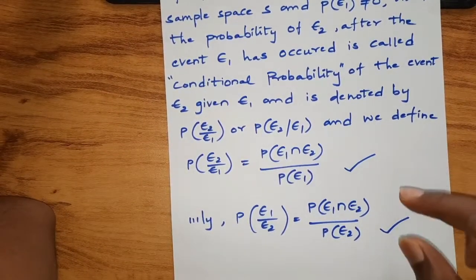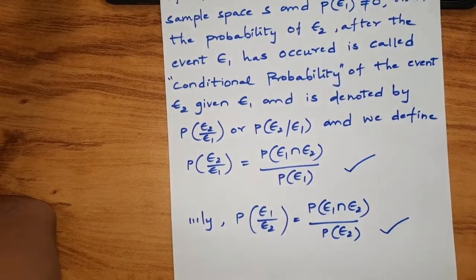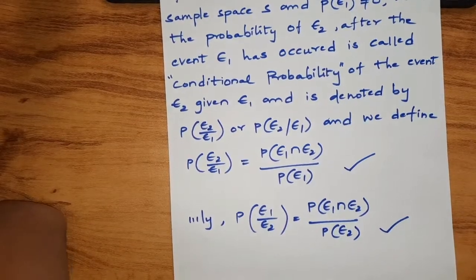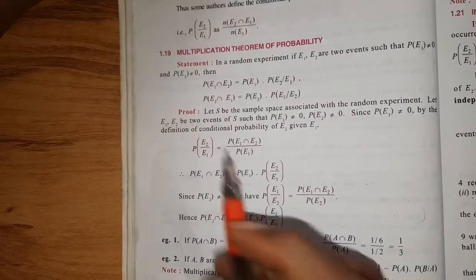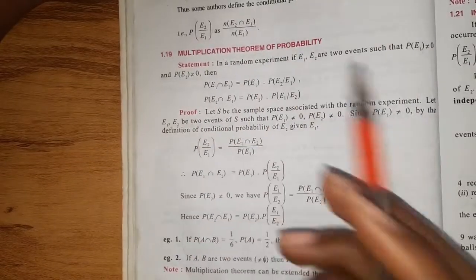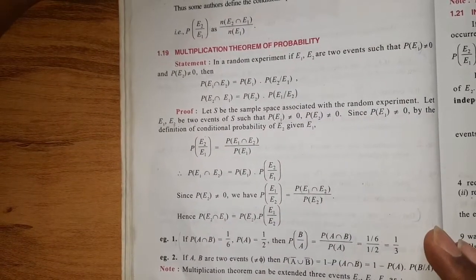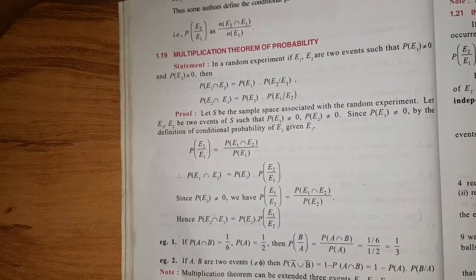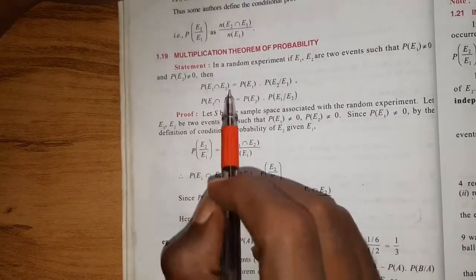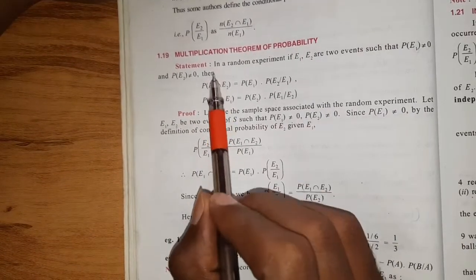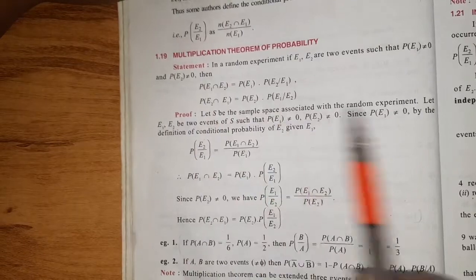Next we will find the multiplication theorem. If we want to find all the probabilities, we will use the multiplication theorem. So the multiplication theorem statement is as follows.